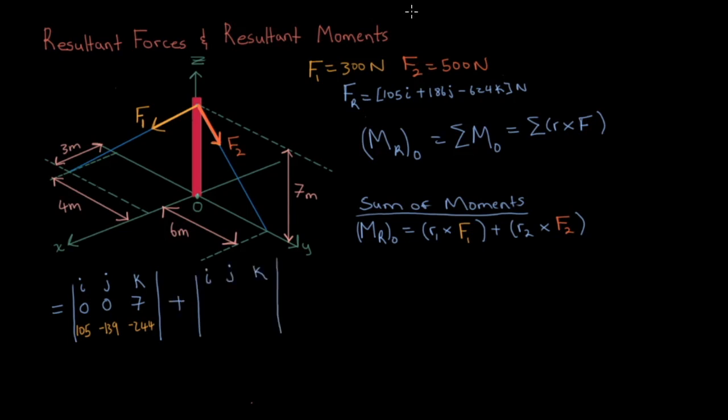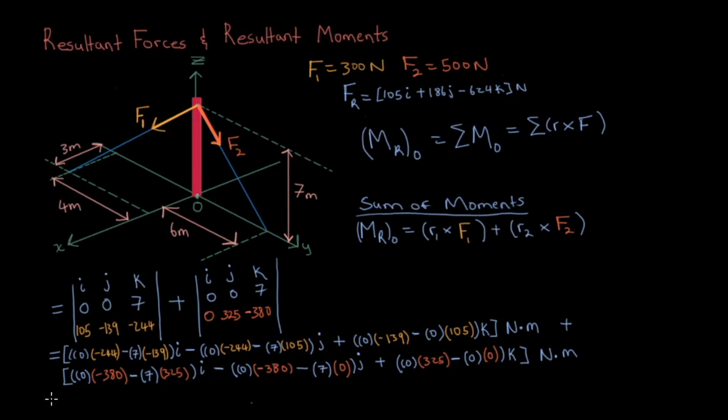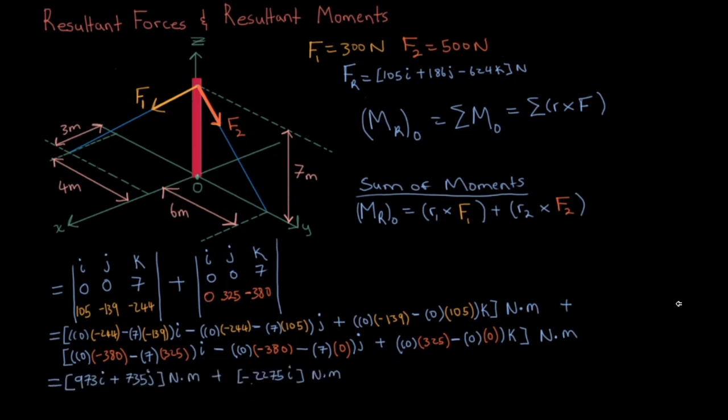Okay, now let's do our next cross product. Let's find out what R2 is. Well, in this example it just happens to be the same as R1. Then we'll put in F2 which we previously calculated to be 325j minus 380k. Then, computing both cross products and taking the sum of them gives us the following: Negative 1302i plus 735j newton meters. And that is our resultant moment.